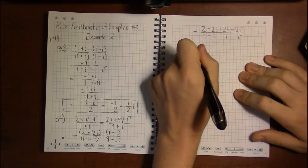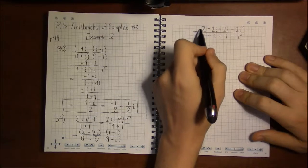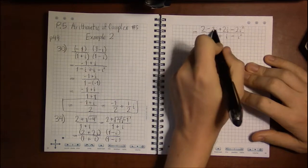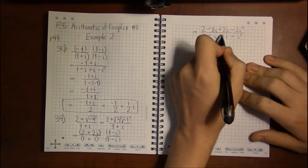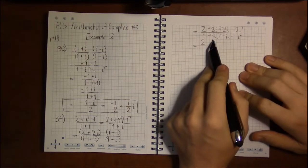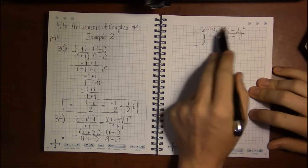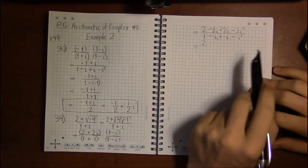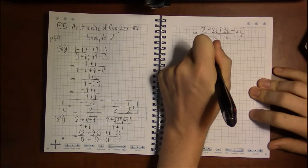So as usual, we can't do anything with the first number on top or on bottom, so we leave it there for now. In this case, the middle two terms of both the numerator and the denominator cancel, so I just have the first and last terms for both the numerator and the denominator. And i squared, as we've been drilling this whole time, is minus 1.